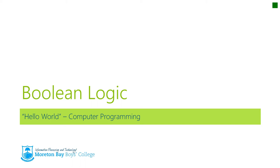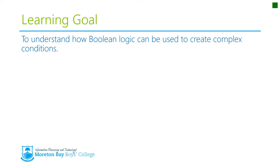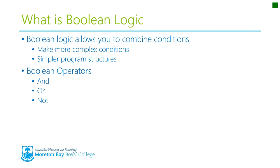Welcome to our short video on Boolean logic. By the end of this video, we hope to understand how Boolean logic can be used to create complex conditions. Boolean logic is a method which allows you to combine your conditions. We were just looking at if statements before, and Boolean logic allows you to actually have more than one condition in any if statement. It allows you to make complex conditions, but counter-intuitively, it results in simpler programming structures — you have to have fewer if statements because your conditions can be far more complex.